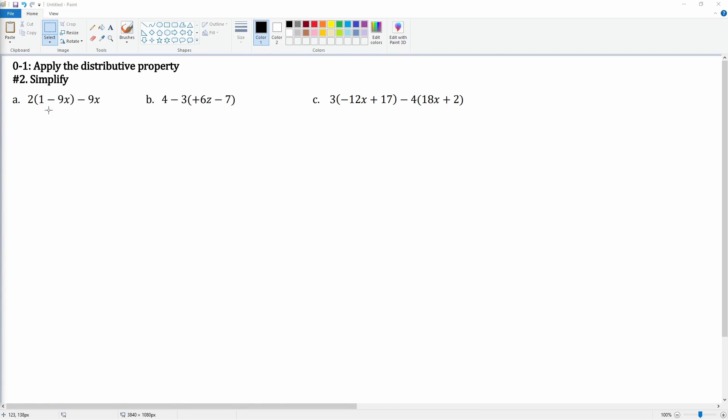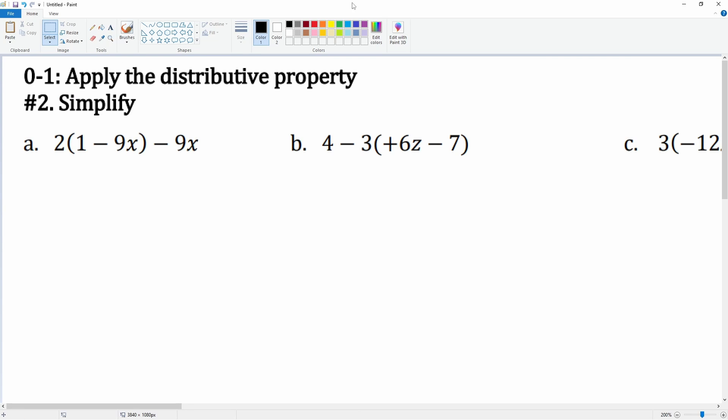We're asked to apply the distributive property for number two. Let's simplify. Here we have the 2 in front of the parentheses that's going to be distributed to the 1. When we distribute, we multiply: 2 times 1 is 2.